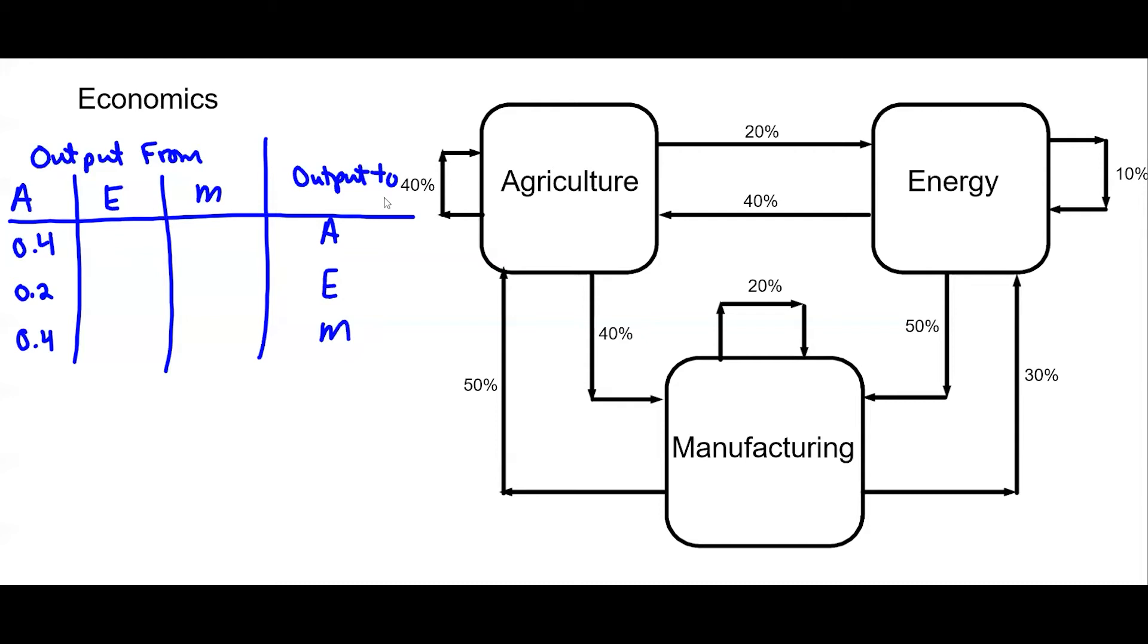And then for energy, the output to agriculture is 40 percent, it keeps 10 percent, and to manufacturing it's 50 percent.